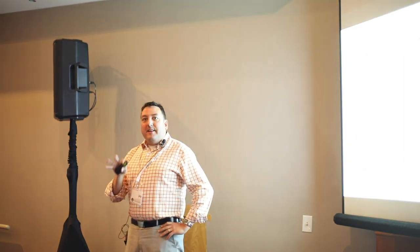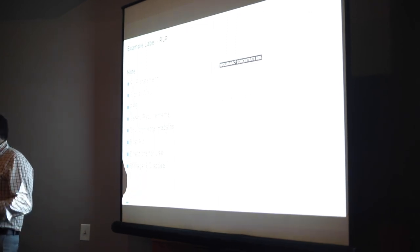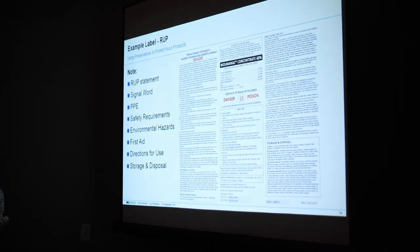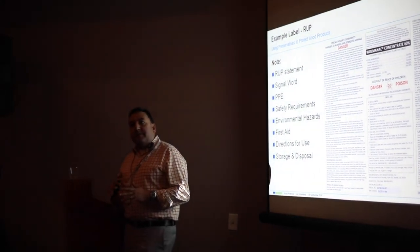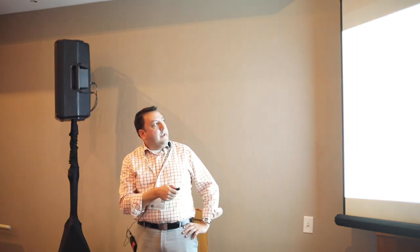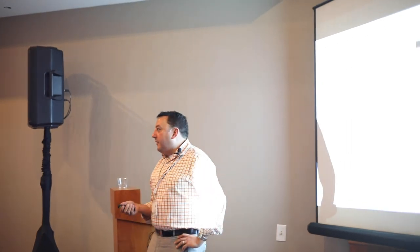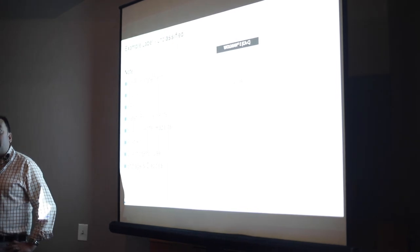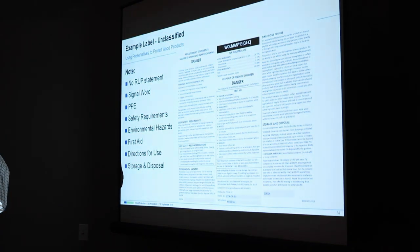As far as labeling requirements, restricted-use pesticides such as CCA — sold under our trade name Osmose CCA — carry a specific box with a red skull and crossbones, plus a restricted-use statement, safety requirements, PPE information, disposal instructions, and first aid. A general-use label like copper azole does not have those restricted-use designations, but all other parts of the label — safety information, PPE — remain present and should be followed.